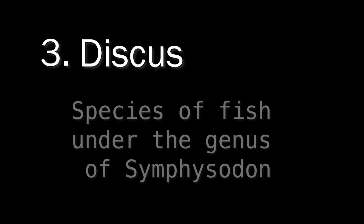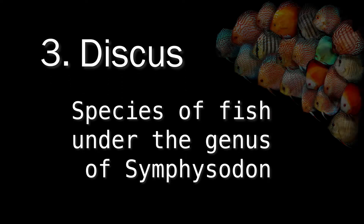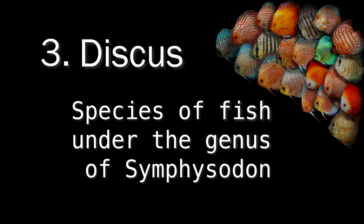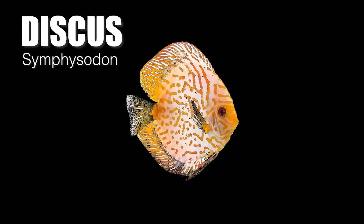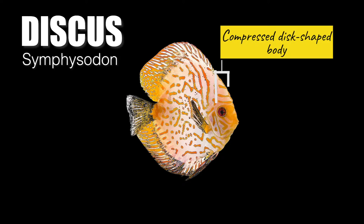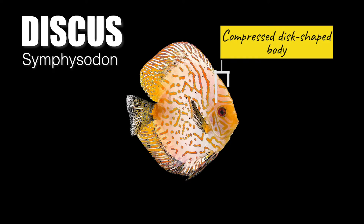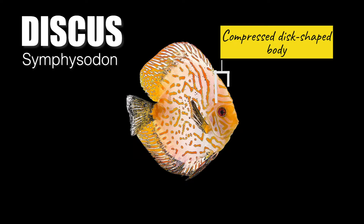The third terminology is discus. Discus is a species of fish under the genus Symphysodon, native to the Amazon River. They are well known among ornamental freshwater fish hobbyists due to their distinctive shape and bright colors. Discus have a laterally compressed, disc-shaped body with brightly marked vibrant colors.